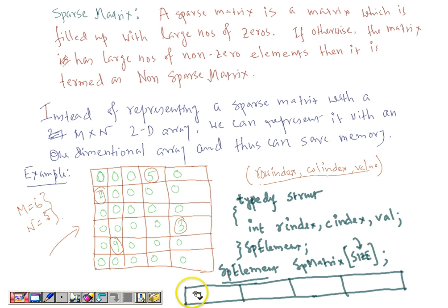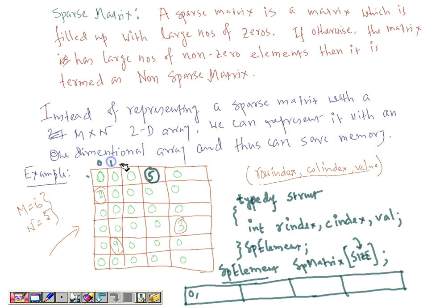The first element contains the row index, column index, and value for the first non-zero element of the sparse matrix. The row index of the value 5 is 0, the column index is 3, and the value is 5. For the second non-zero element, the row index is 1, the column index is 0, and the value is 2.